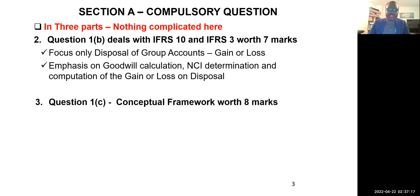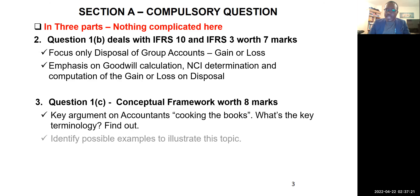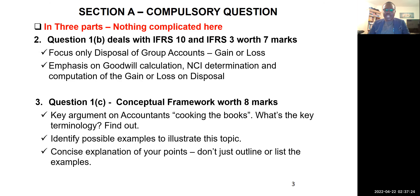Still under Question 1, still under Section A: Question 1b is worth 7 marks and focuses on disposal of group accounts — how to determine the gain or loss on disposal. The emphasis is on whether you can calculate goodwill based on IFRS 3, determine the non-controlling interest, and then combine these to calculate the gain or loss. Very easy — you should be able to do this in three to five minutes maximum.